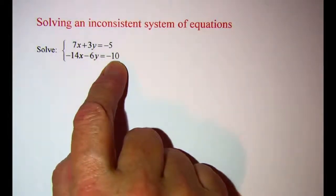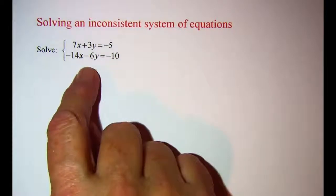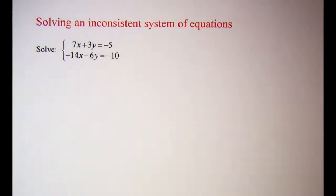Now typically you won't know that the system is inconsistent until you actually get started working on it. This one will be pretty obvious once we multiply to eliminate one of our variables.